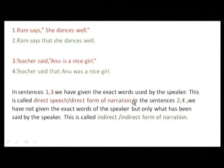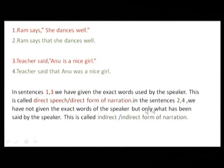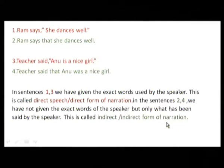In sentences two and four, we have not given the exact words of the speaker. When we use 'that', the exact words of the speaker are not retained. We have changed it in our own words, conveying only what was said by the speaker. This is called the indirect form of narration. Words inside inverted commas are direct form of narration; with 'that' added, without inverted commas, it is indirect form of narration.